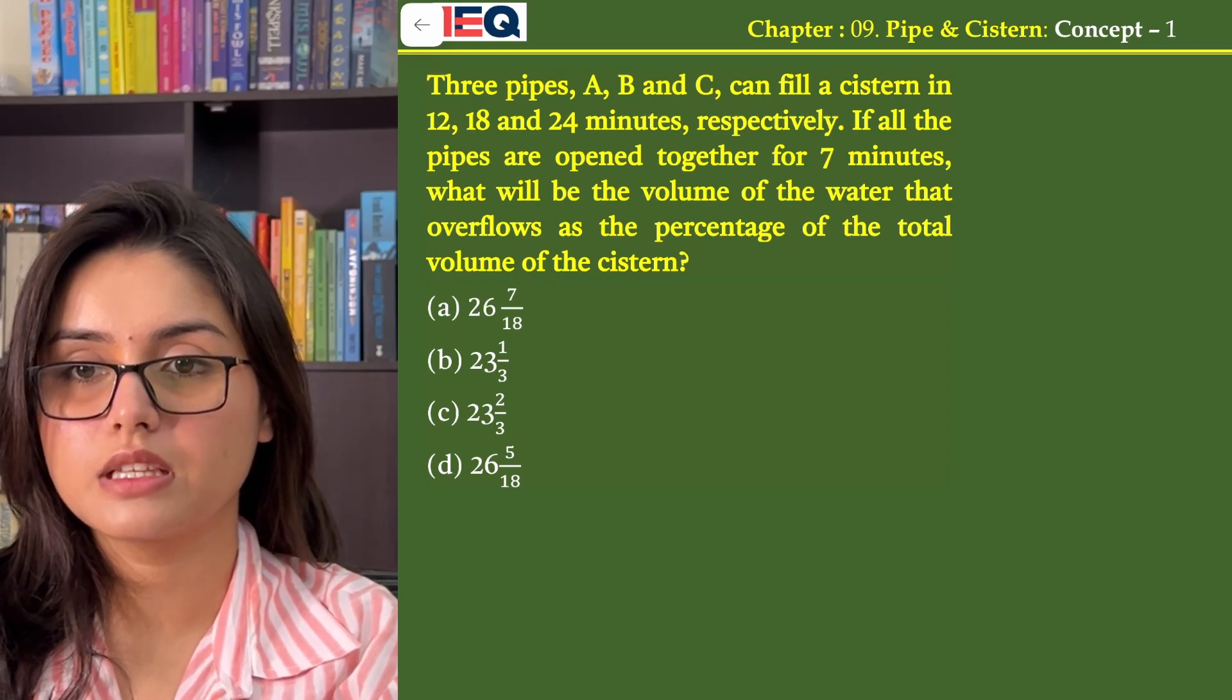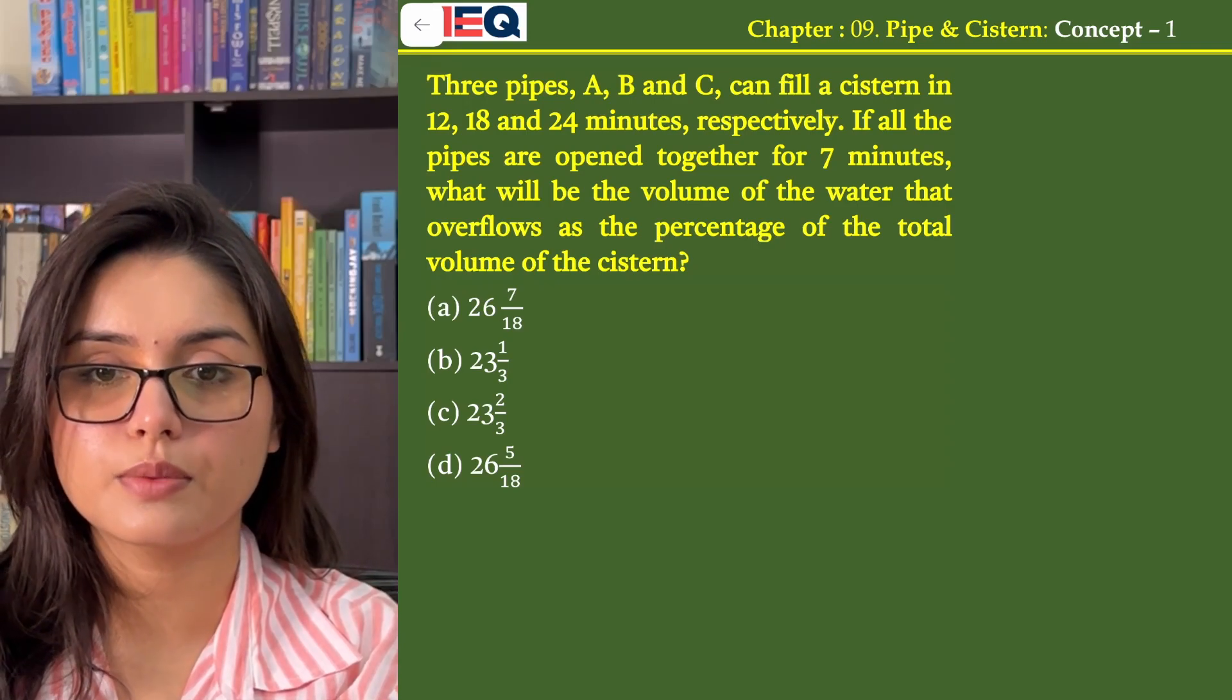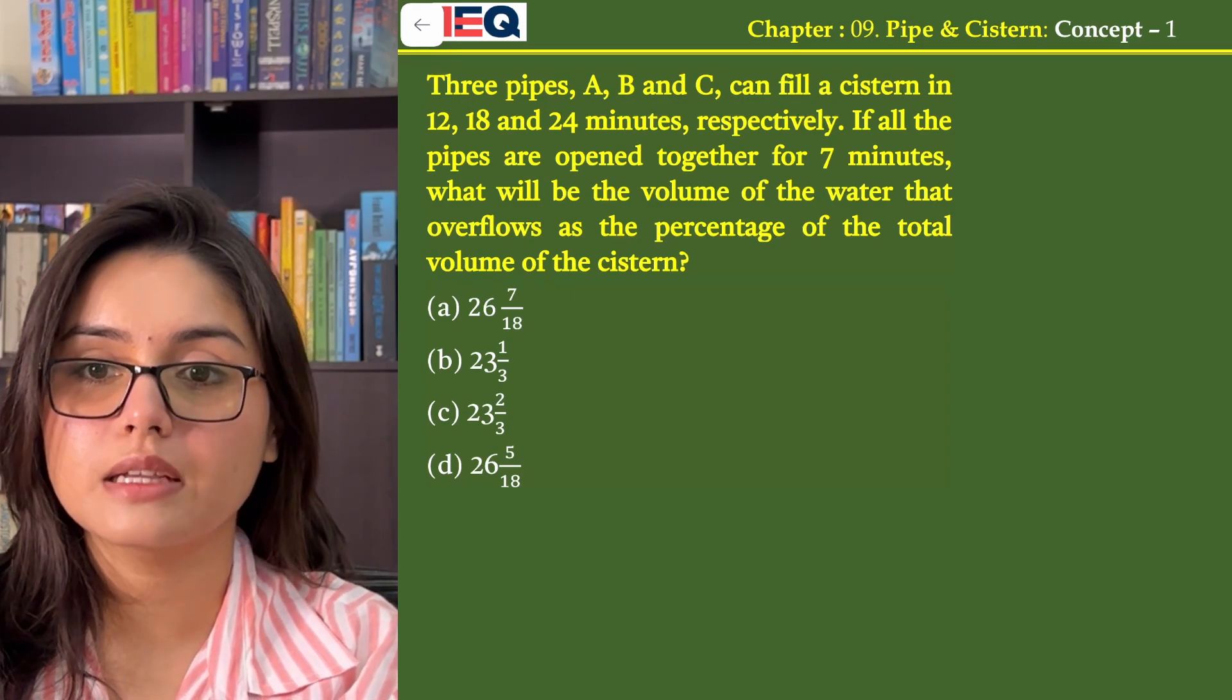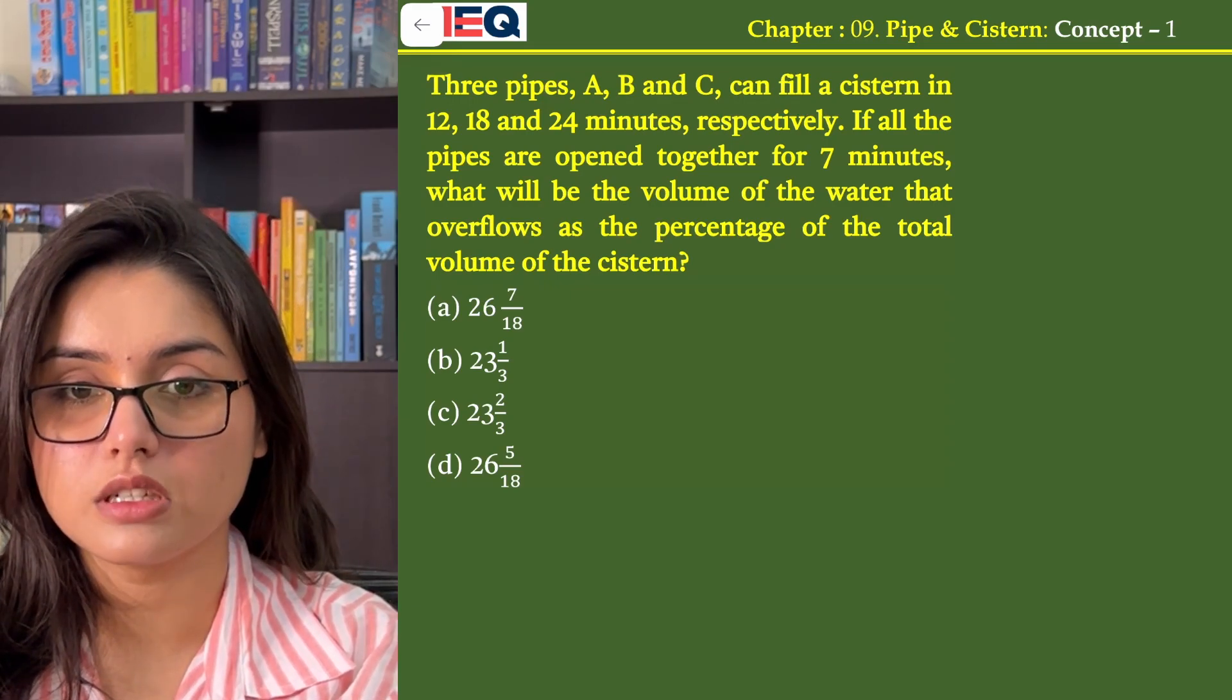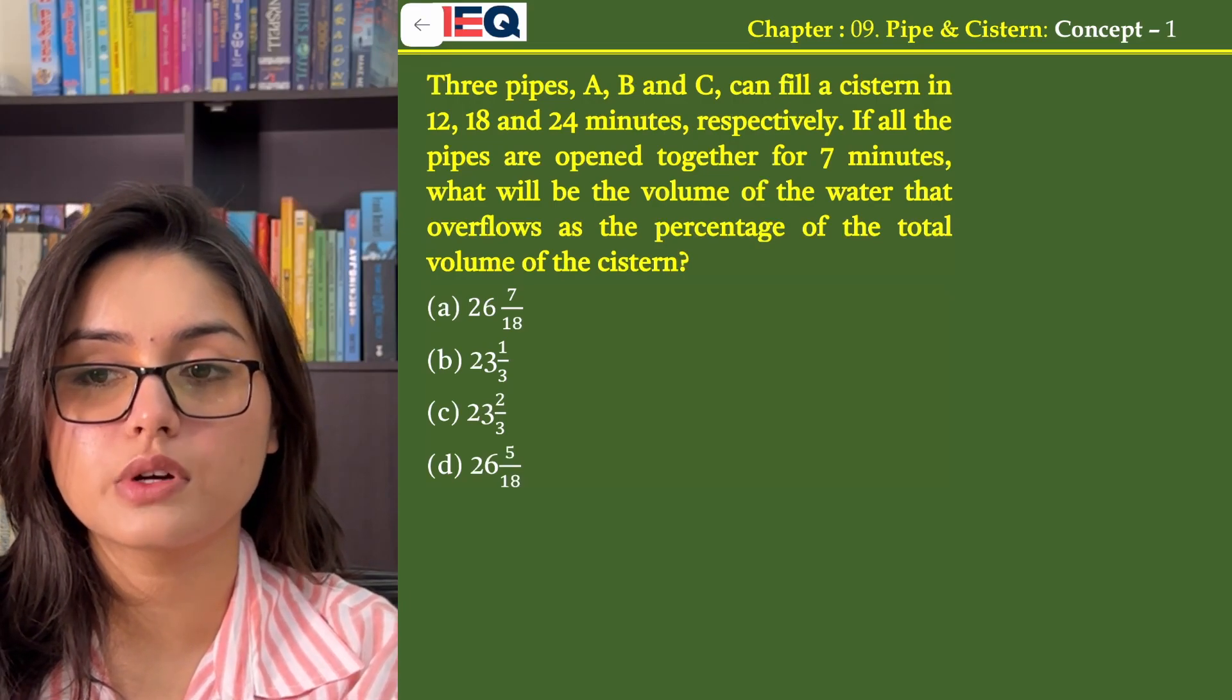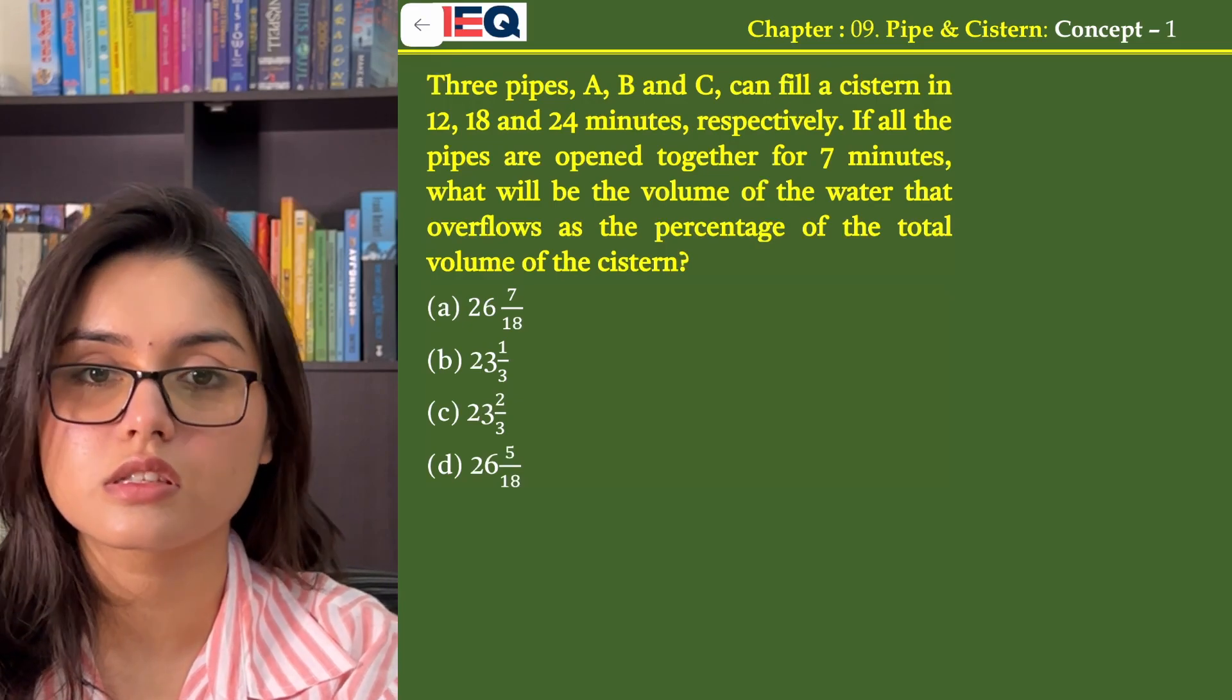Three pipes A, B and C can fill a cistern in 12, 18 and 24 minutes respectively. If all the pipes are opened together for 7 minutes, what will be the volume of the water that overflows as the percentage of the total volume of the cistern?